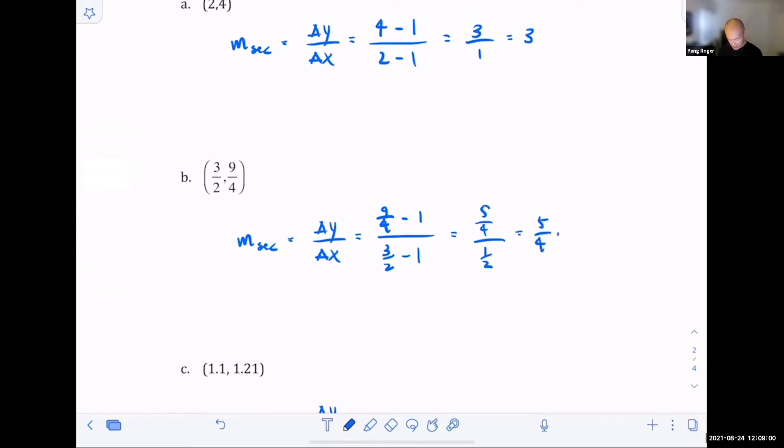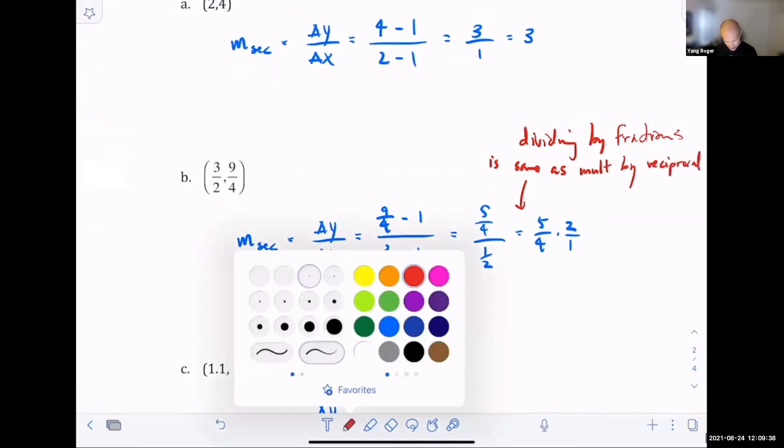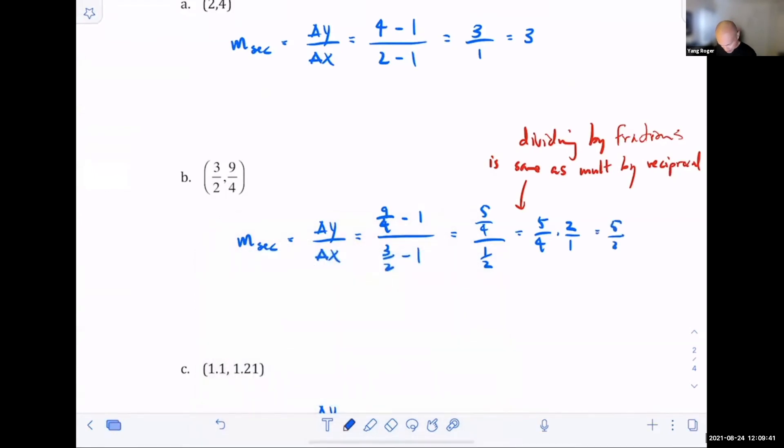Dividing by a fraction is the same thing as multiplying by the reciprocal. I hope you guys know that because we use this a lot. Let me write a comment: dividing by a fraction is the same as multiplying by reciprocal. This would result in five over two, which is 2.5. Let's highlight these numbers as our answers.